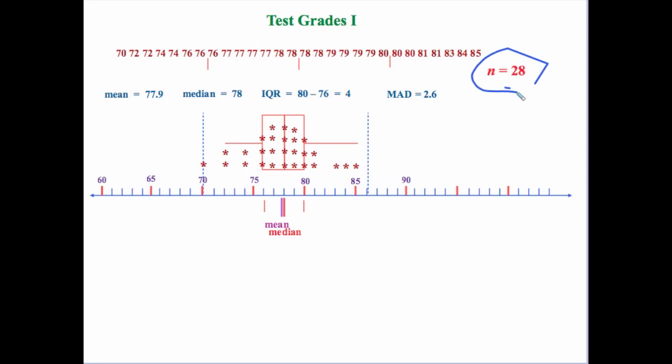Then I make sure that my data is in order from least to greatest. I determine that the median was 78 for my whole data set. And then for the upper and lower halves, the upper half median is 80 and the lower half median is 76. So I take the difference, which is 4 — my interquartile range is 4.